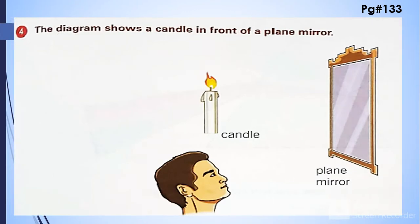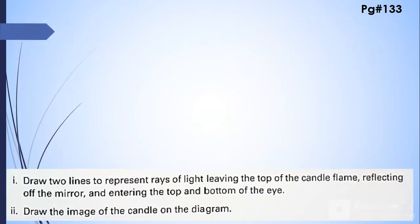The diagram shows a candle in front of a plane mirror. This is the fourth question. Draw two lines to represent a ray of light leaving the top of the candle flame, reflecting off the mirror, and entering to the top and bottom of the eye. So this is a candle, a plane mirror is there.